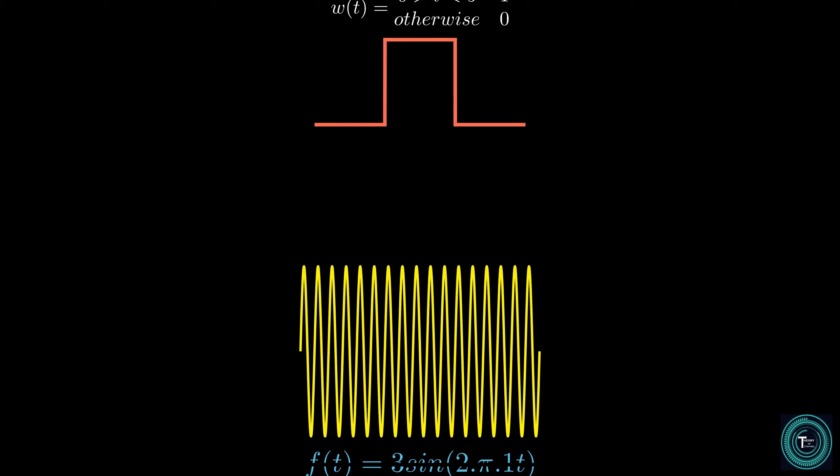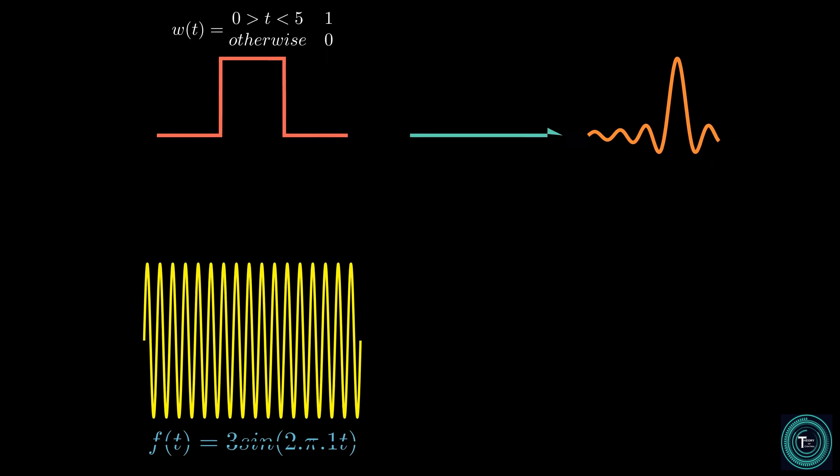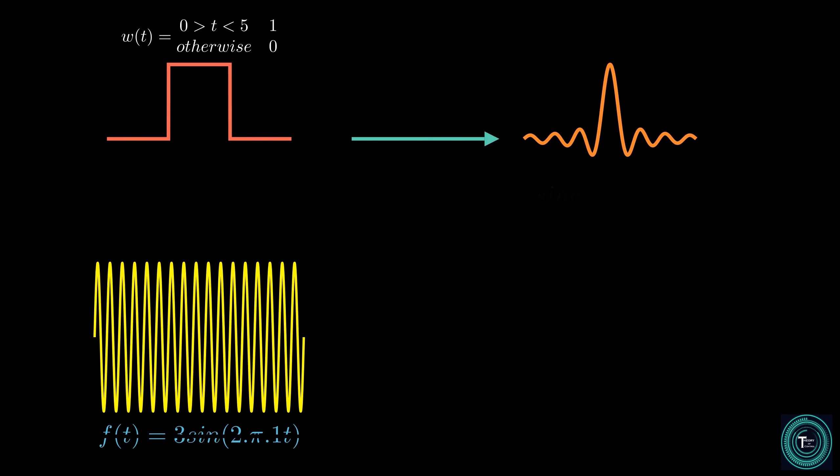The Fourier transform of a rectangular function is a sinc function, which is a sine wave that decays to zero on both ends. And the Fourier transform of our main and windowed function is the ideal spike we saw in part one that jumps at each frequency present in the signal.